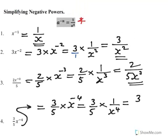Which will give us 3 times 1 is 3, and 5 times x to the 4 is 5x to the power of 4, and that would be the answer.